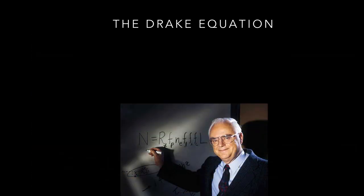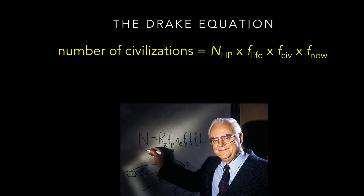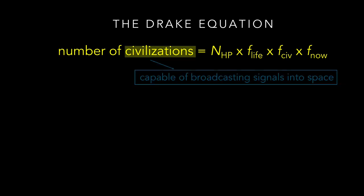The Drake Equation is named for astronomer Frank Drake, who first wrote down his equation in 1961. Here we see Dr. Drake with his equation in its original form. In this book, we will use the Drake Equation in a slightly modified form. The left side tells us we are seeking to estimate the number of civilizations — in this case, civilizations capable of broadcasting signals into space — that we might expect to find in our Milky Way galaxy.